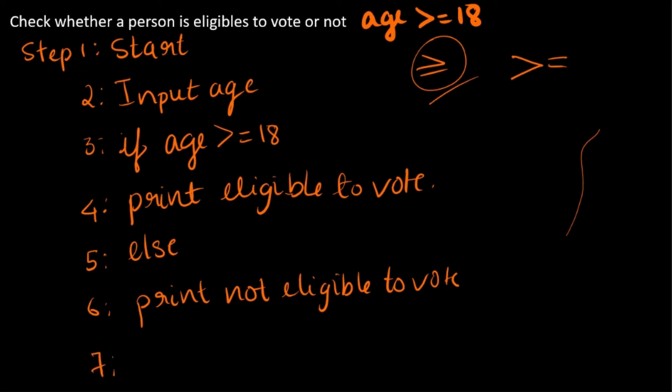Seventh step is to stop the program. So this is the algorithm to check if a person is eligible to vote. I will be doing the flowchart. The first step is to start, so for starting...